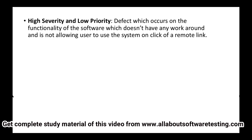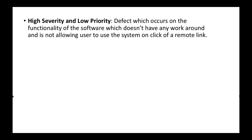Next: high severity and low priority. Defects on functionality with no workaround that cause a crash when clicking a remote link in a corner of the page fall here. It is low priority because the user accesses a remote, less-visible link. It is high severity because clicking that link crashes the software completely, making it unusable.